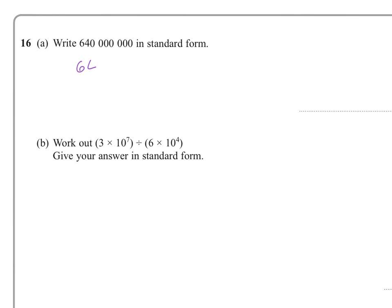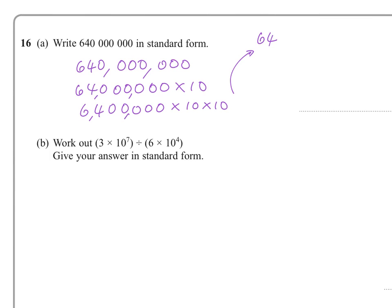So if we write the number out again, then we could look at this number in this particular way. We could say it's this number which is 64 million times 10, or we could say it is 6,400,000 times 10 times 10 and so on.